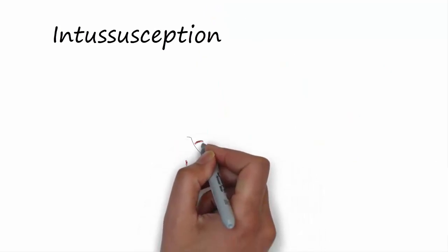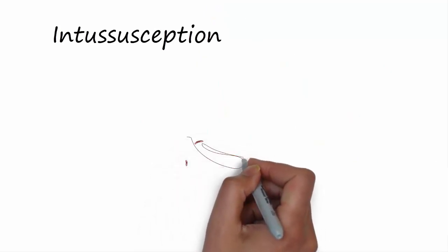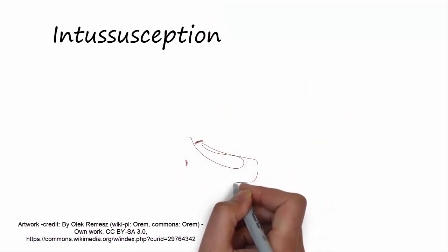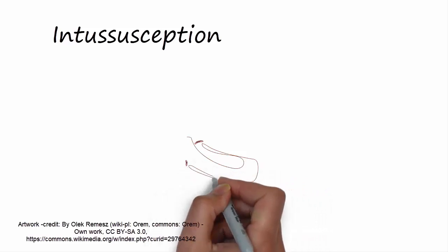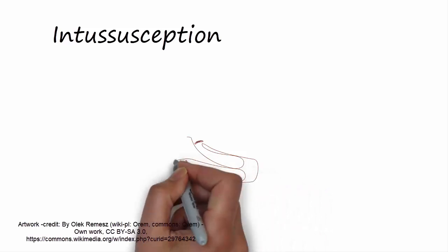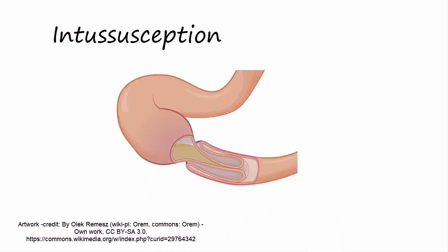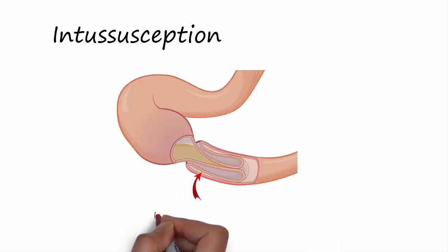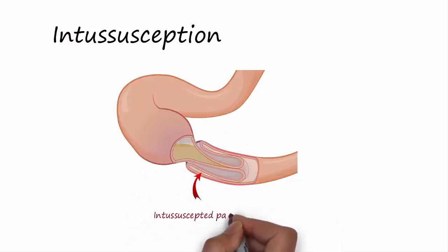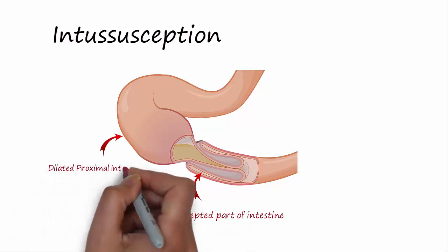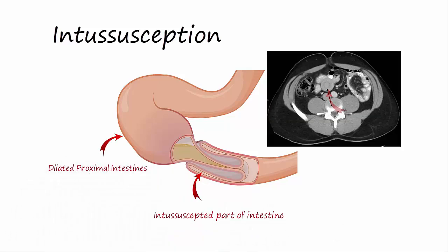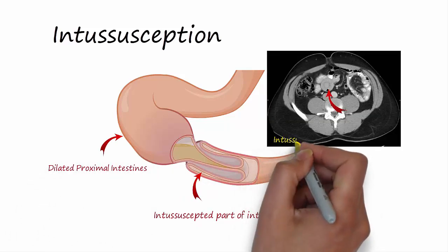Intussusception affects very young children, usually under two years of age. It happens when one part of the intestine slides into the other, much like the piece of a telescope — one part of the intestine folds into the other. It is a life-threatening condition which can either be treated with the help of a radiological procedure or otherwise needs urgent surgery.